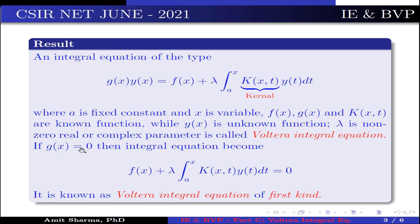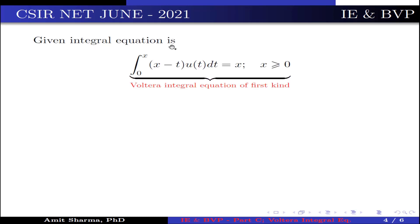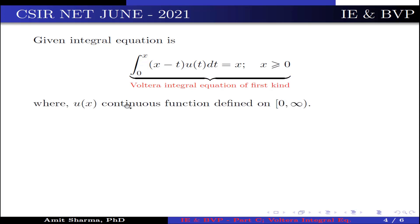If g(x) = 0, then the integral equation becomes f(x) + λ·∫[a to x] K(x,t)·y(t) dt = 0, and it is known as a Volterra integral equation of the first kind. The given integral equation, ∫[0 to x] (x − t)·u(t) dt = x, where x ≥ 0, with u(x) continuous on [0, ∞), is a Volterra integral equation of the first kind.